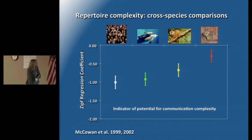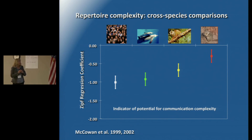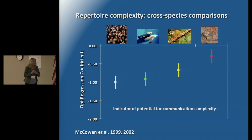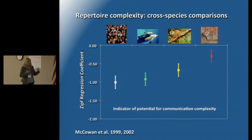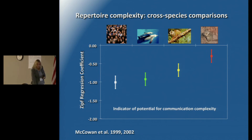We basically plotted Zipf's coefficient values for human languages against a couple of different other species categorized in different ways for their calls. What we found is that bottlenose dolphins showed a Zipf slope similar to languages — a negative one Zipf slope. These are adult dolphins. Infant dolphins showed a slightly more repetitive slope. So one of the things Zipf slope regression coefficient might tell us is something about the potential for communication complexity, though you have to look at whether there's actual sequential information to know for sure.